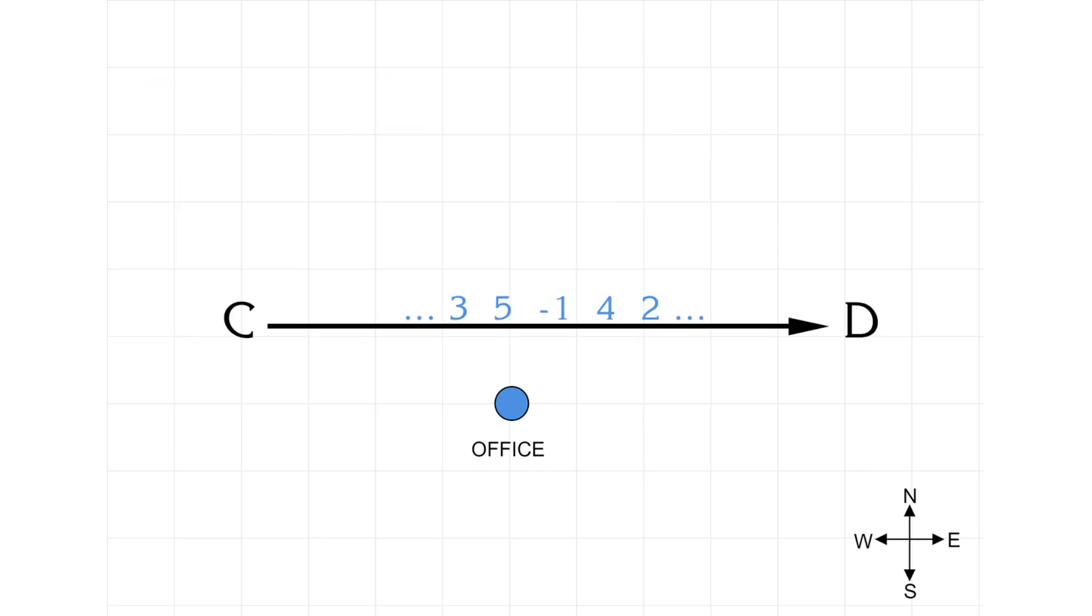Now suppose there are two other colleagues C and D who also have the same number device but have a slightly different shared understanding of the order of the four directions. Maybe they have ordered the directions north, south, east, west.